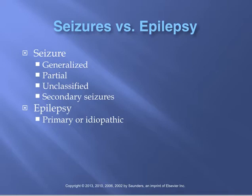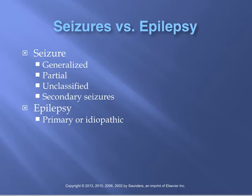Absence seizures are more common in children and tend to run in families. The next classification is partial seizures, also known as focal or localized seizures. These begin in one part of the cerebral hemisphere, versus generalized seizures which involve both hemispheres. Partial seizures are divided into complex — where you lose consciousness — and simple, where the patient remains conscious. Unclassified seizures happen for no apparent reason and don't fit another category. Secondary seizures can be caused by a brain tumor or lesion, and treating the underlying cause treats the seizures.